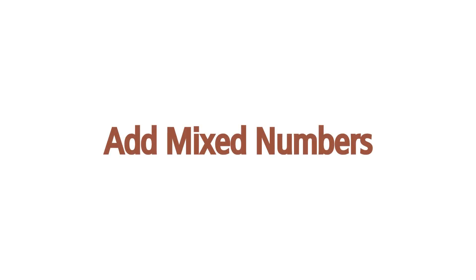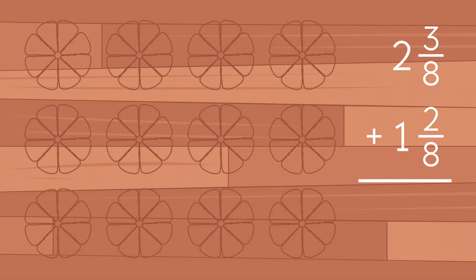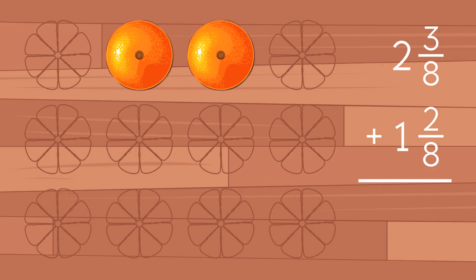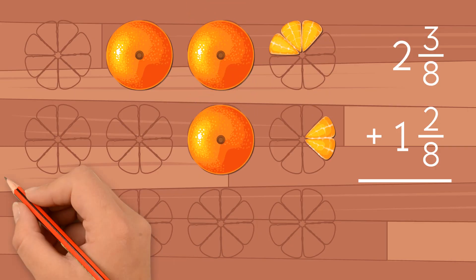Add mixed numbers. How do we add 2 and 3 eighths plus 1 and 2 eighths? Let's use a model to help. We have 2 wholes and 3 eighths, and 1 whole and 2 eighths.